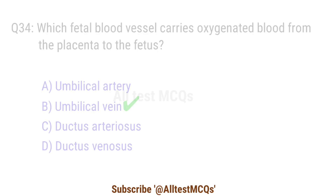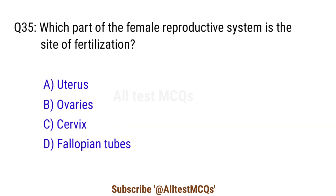Question 35. Which part of the female reproductive system is the site of fertilization? The right answer is option D. Fallopian tubes.